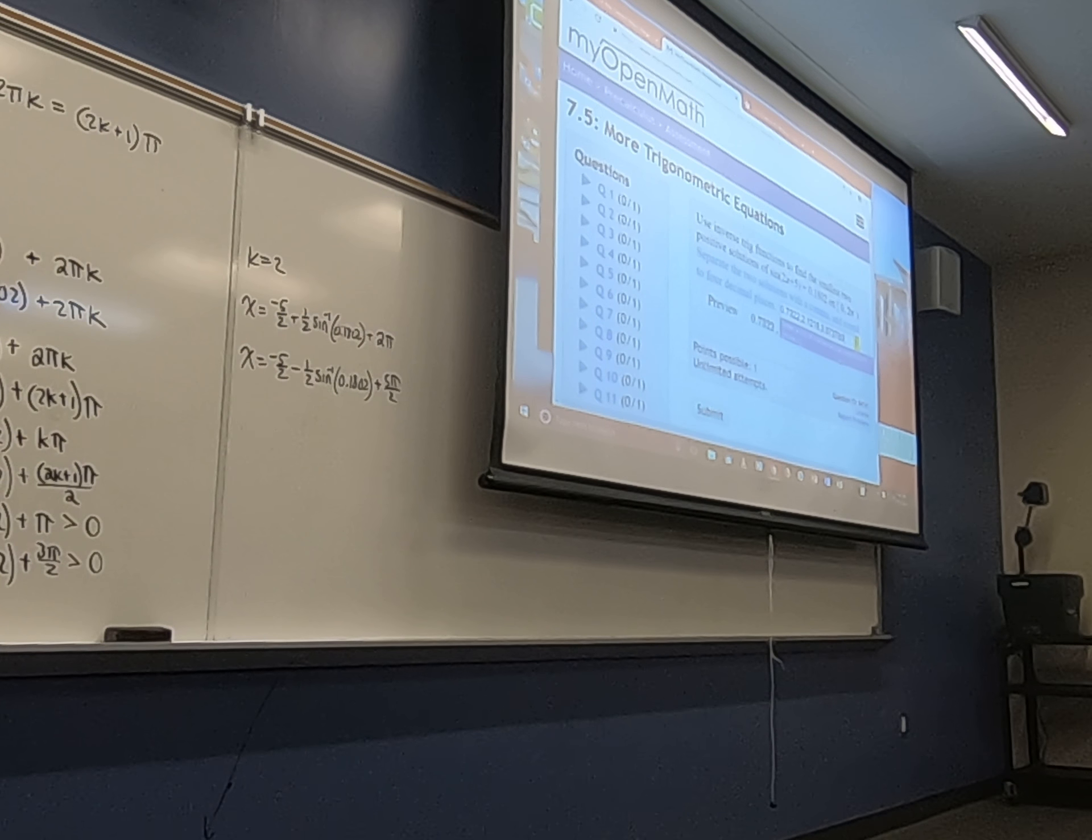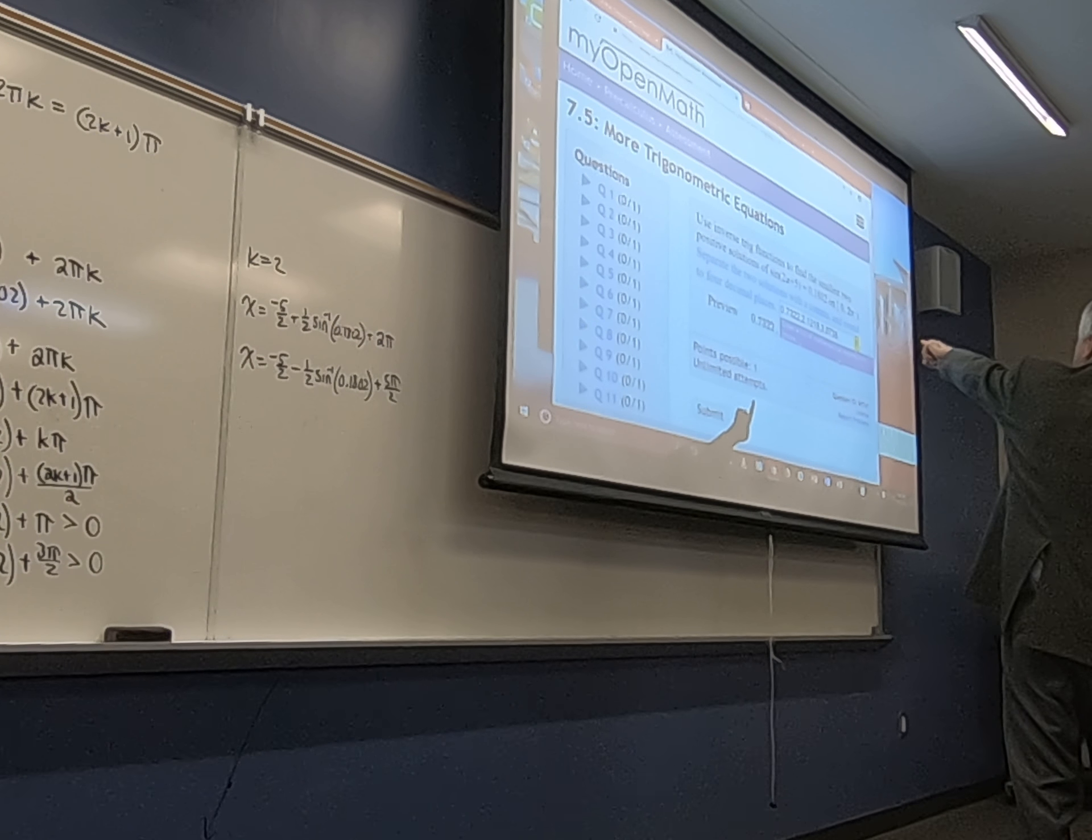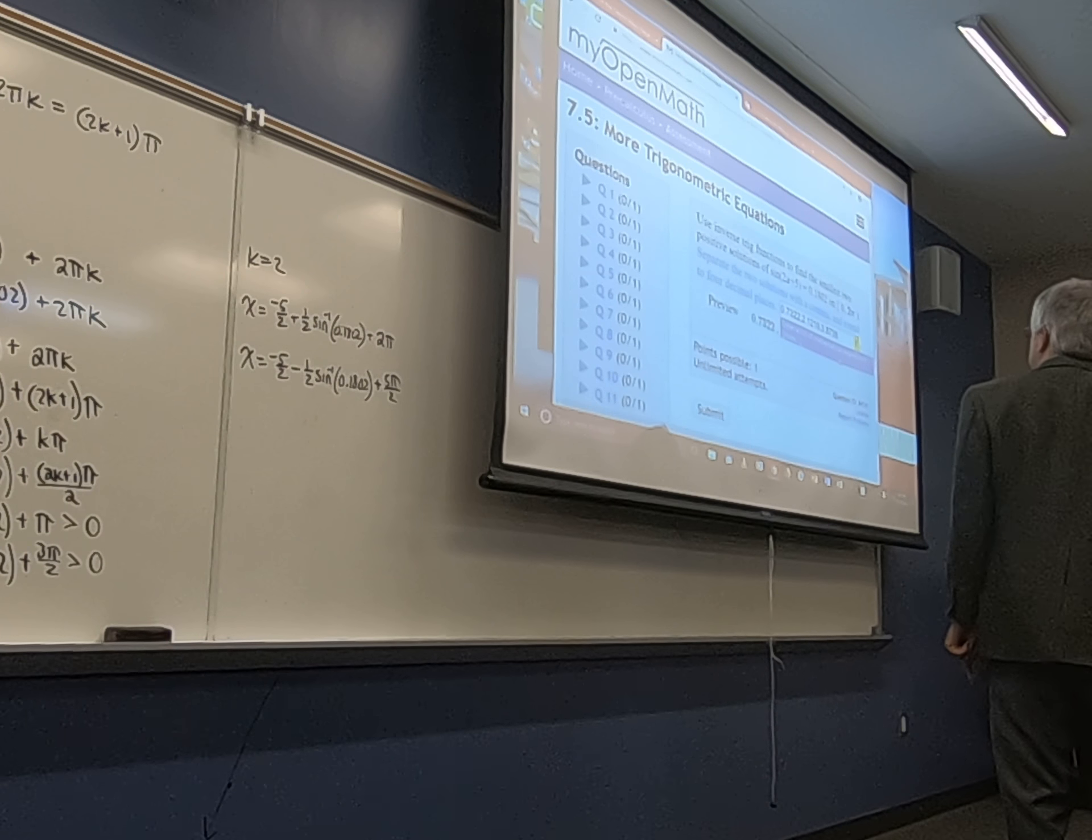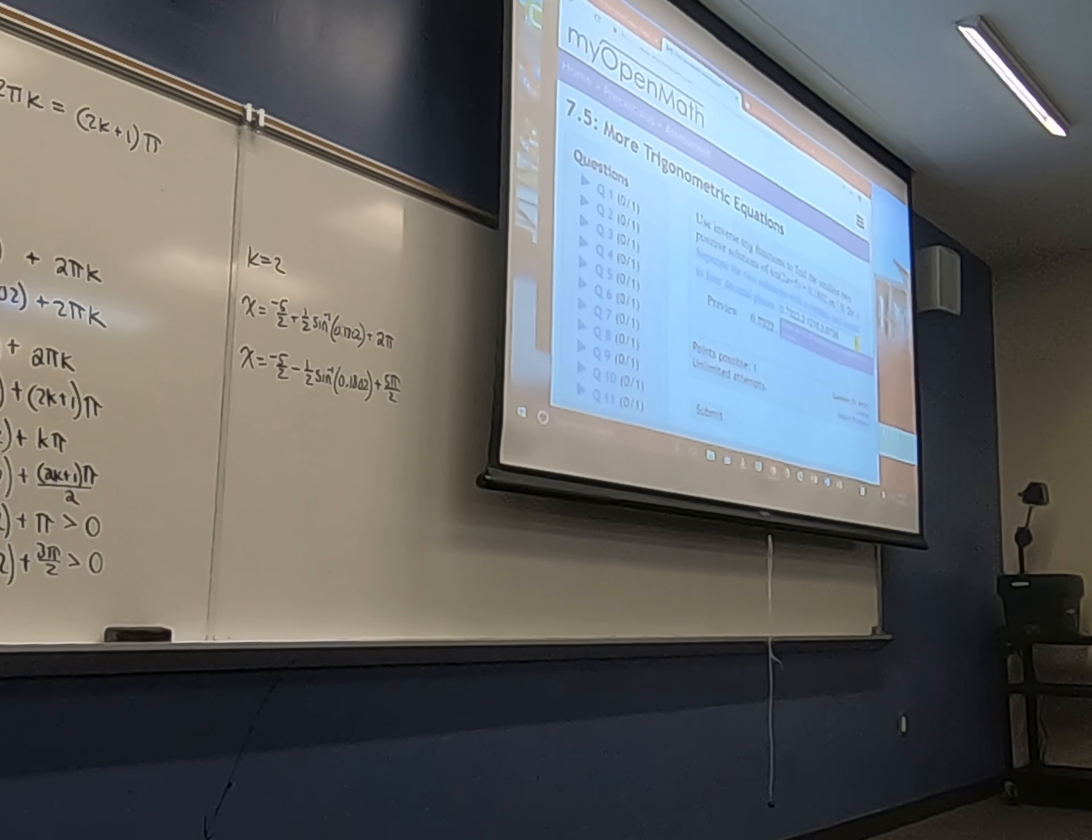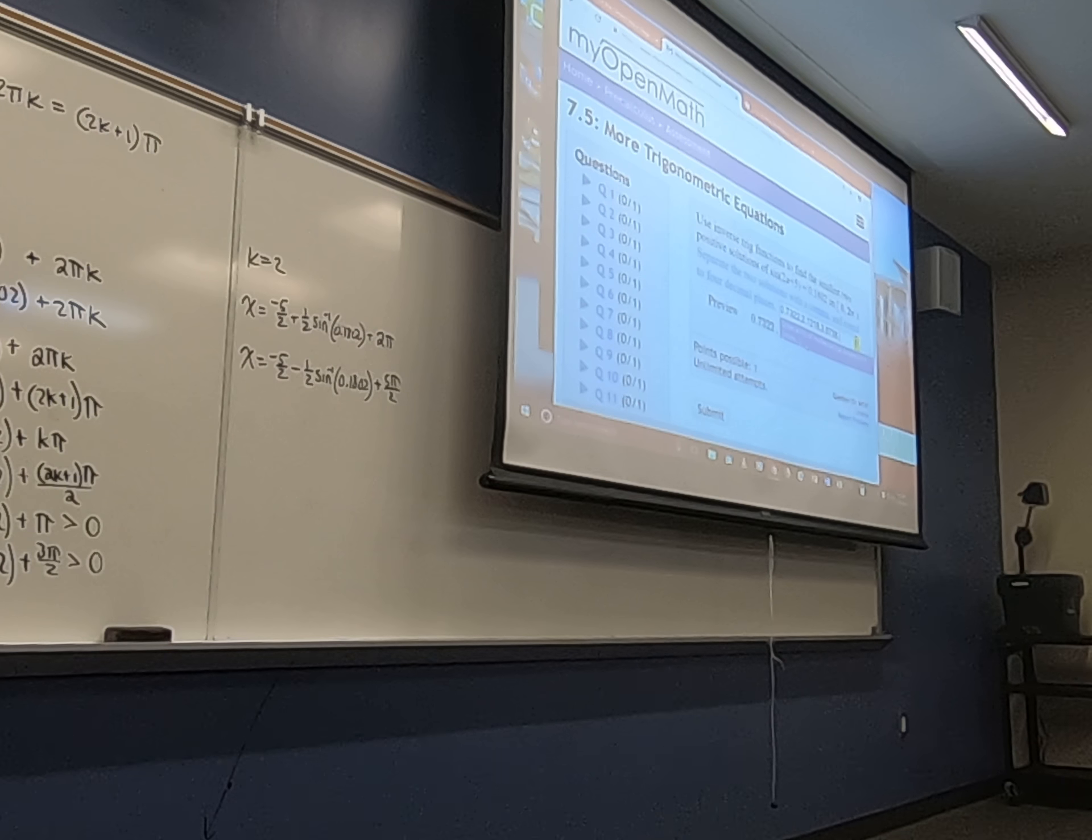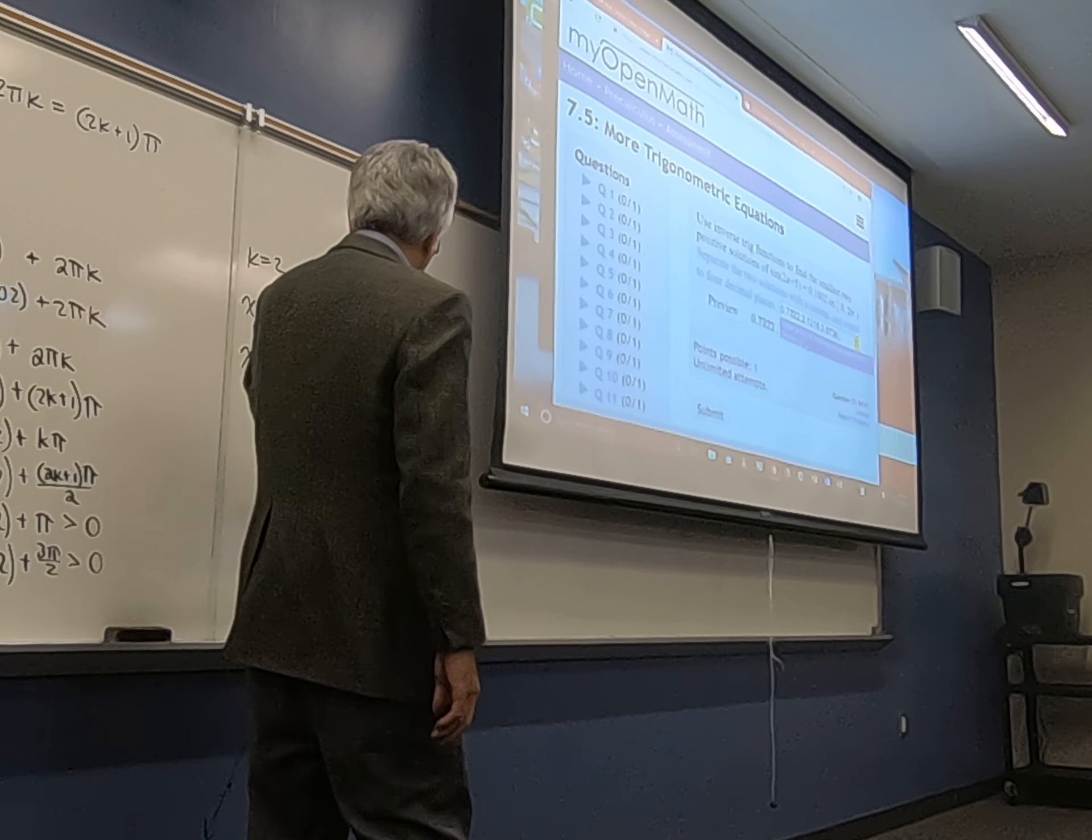So we would round that up to 0.8738, right? And notice that the first and the third differ by π. If I add 3.14 to the first, I get 3.87 change. So that's looking good. And this next one, I think I can just add π again to this one. If I've got this one, I add π to 3π over 2, I get 5π over 2.